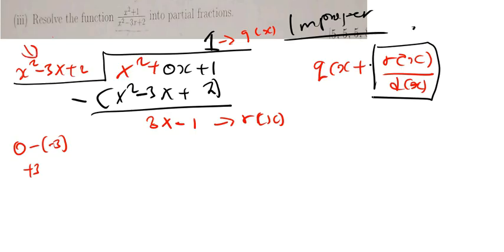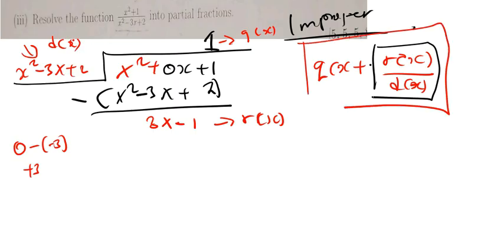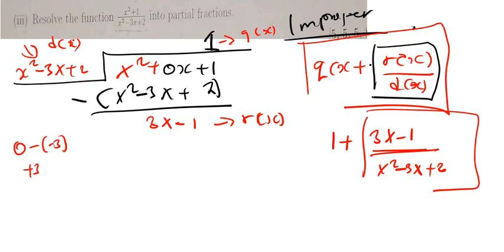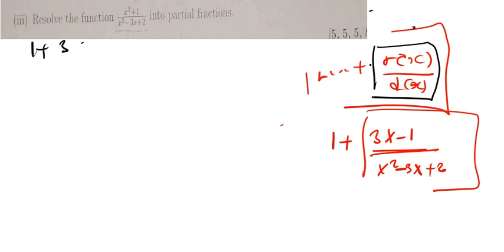So the remainder R(x) is 3x minus 1, and the quotient Q(x) is 1, with divisor D(x) being x² minus 3x plus 2. I need to write the result in the form: quotient plus remainder over divisor. So I don't have enough space here — I will create space and write: 1 plus (3x minus 1) divided by (x² minus 3x plus 2).